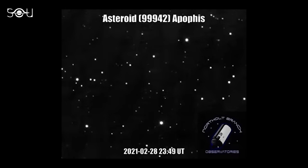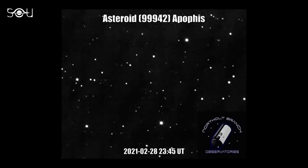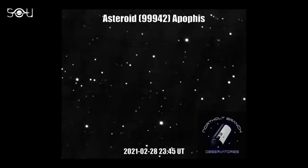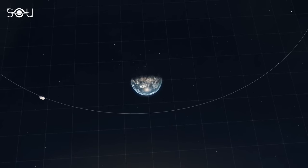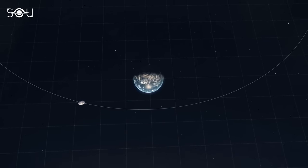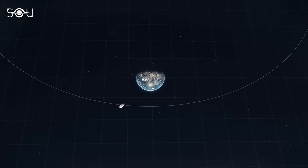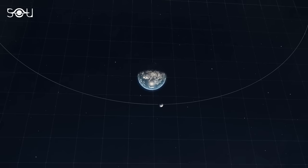In March 2021, Apophis conducted a distant flyby of Earth, allowing astronomers to utilize powerful radar observations to refine its orbit around the Sun precisely. To the relief of everyone concerned, the updated analysis definitively ruled out any significant Earth impact events for the next century.